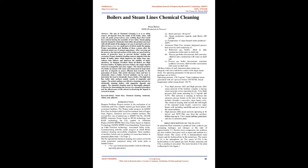Dangote Fertilizer Project consists in the realization of an ammonia and urea complex natural gas-based plants with associated facilities. The project is under progress at Leki Free Zone in Ibahuleki local government area of Lagos State, Nigeria. The ammonia and urea complex includes a normal flow rate of natural gas of 208,695 NM3/HR, 2x2200 MTPD ammonia trains based on HTAS technology, and BASF technology for CO2 capture in ammonia plants.